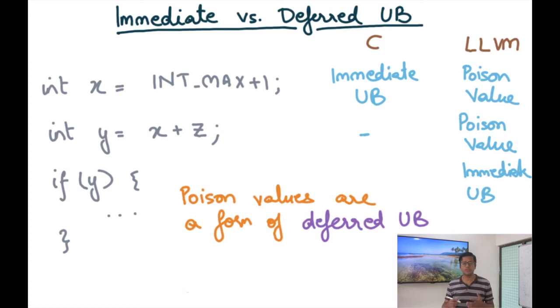And because of this behavior of poison values, which basically defers immediate UB as shown in this example, poison values are, I'm also going to say that poison values are a form of deferred UB. So I'm introducing a new terminology, immediate UB versus deferred UB. Poison values basically implement a form of deferred UB, which is also a weaker form of UB than immediate UB.